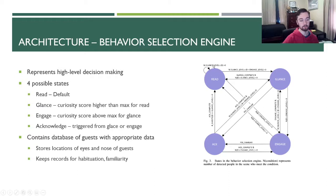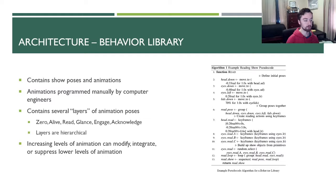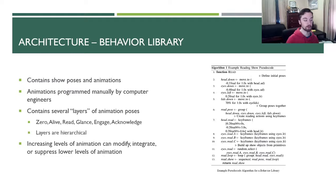The behavior library contains pre-programmed animations and poses for the robot. It works through several hierarchical layers: the zero layer where all motors are set to zero; the alive layer which simulates human-like qualities such as breathing and blinking; and then the four behavioral states mentioned previously. These layers are hierarchical, so increasing layers of animation can modify, integrate, or suppress the lower levels — for example, the engage layer can modify the alive layer.